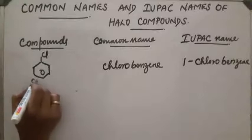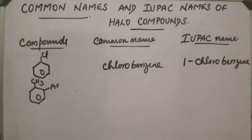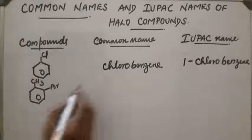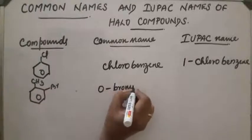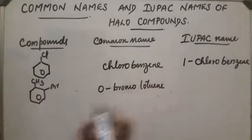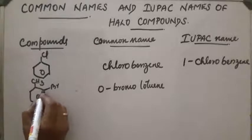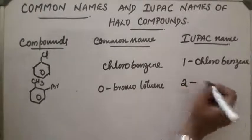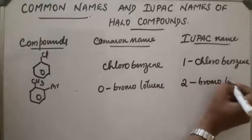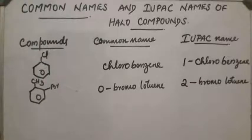Next compound is toluene with a bromine attached. The bromine is at the ortho position, so the common name is ortho-bromotoluene. The IUPAC name is 1-bromo-2-methylbenzene, or we can also write 2-bromotoluene since the bromine is at the second position of toluene.